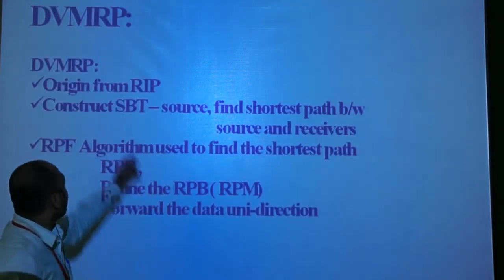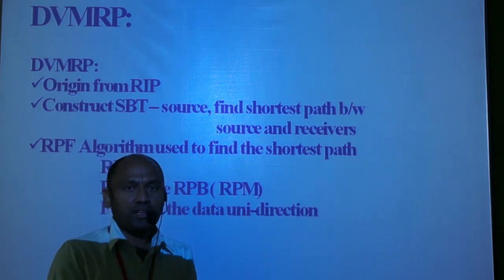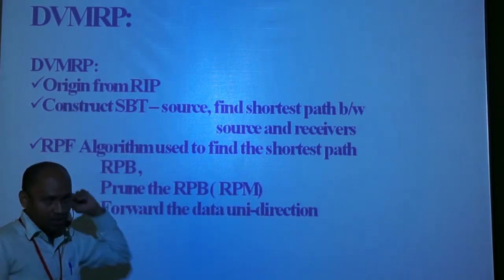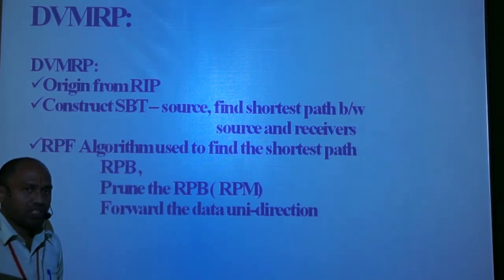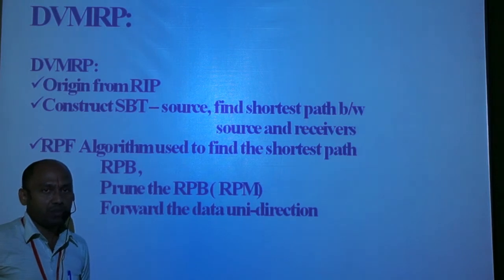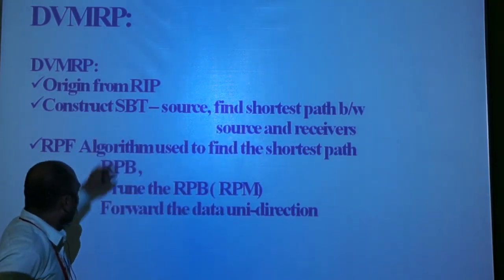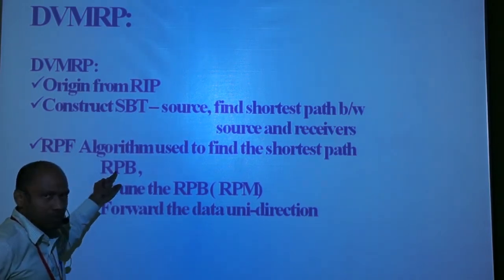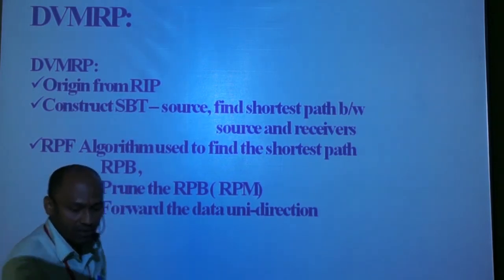DVMRP and PIM are familiar multicast routing protocols. DVMRP is dependent on the unicast protocol. Its role is to begin with the construction of a tree, followed by finding the shared path between source and destination. To find the shared path, DVMRP uses RPF. The steps behind RPF are: reverse path broadcasting, a pruning process, then forwarding the data in one direction.